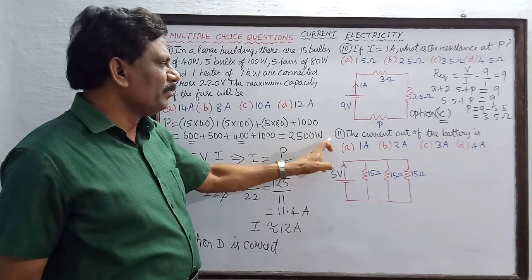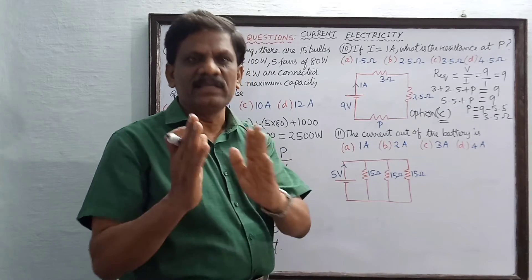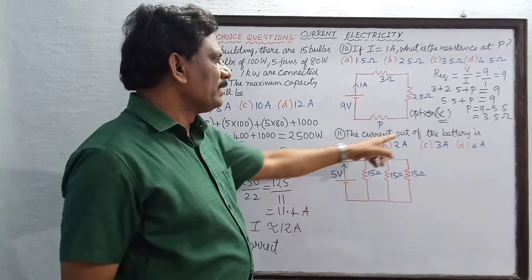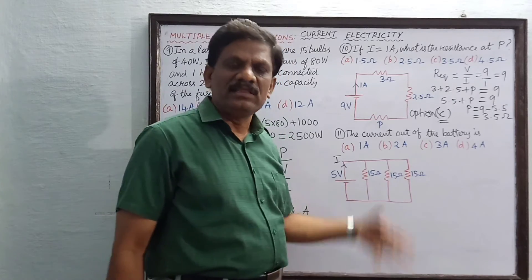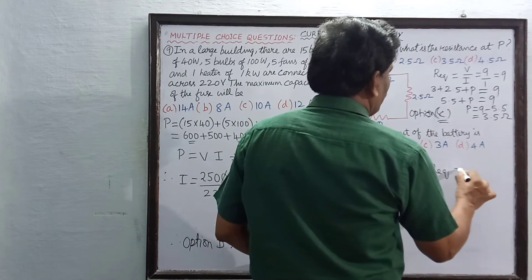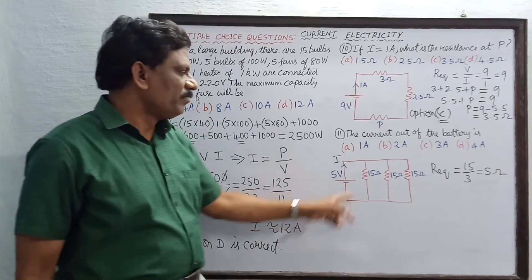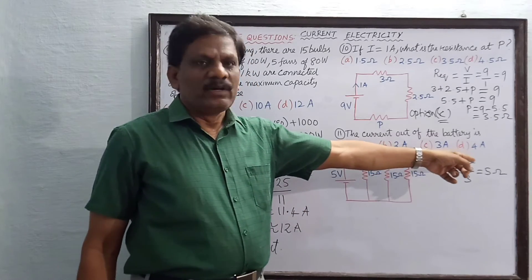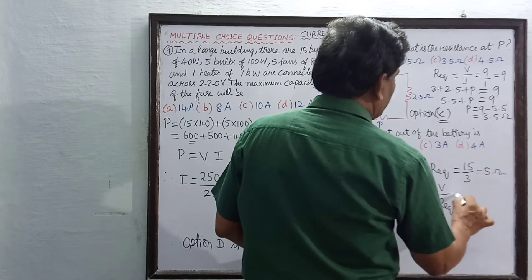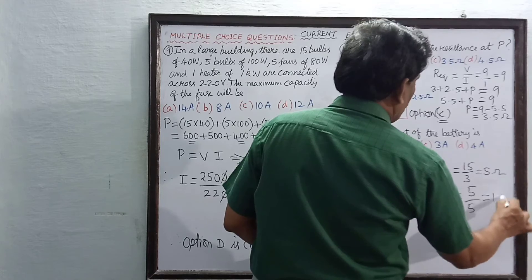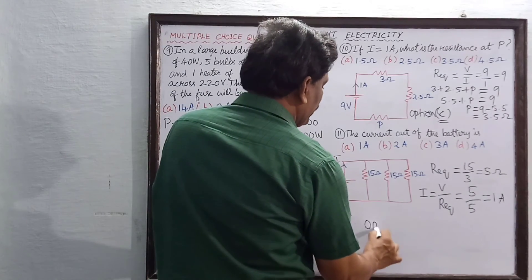Problem number 11 is also circuit-based. Three equal resistors of 15 ohms each are connected in parallel across a 5 volt supply. What is the current from the battery? Since all three are equal at 15 ohms, R equivalent equals 15 divided by 3, which is 5 ohms. Therefore, current I equals V divided by R equivalent, which is 5 divided by 5, equals 1 ampere. Option A is correct.